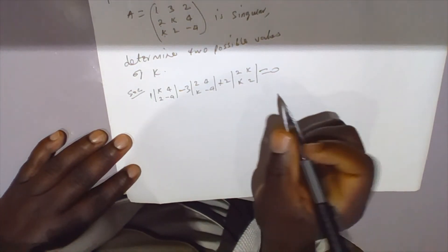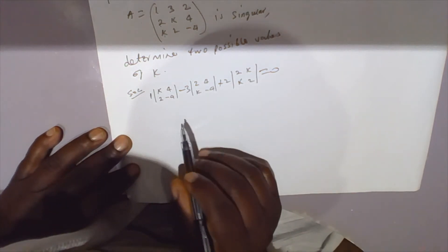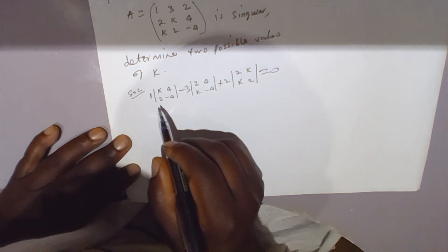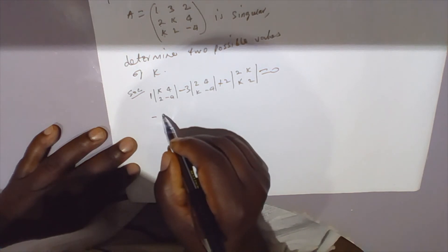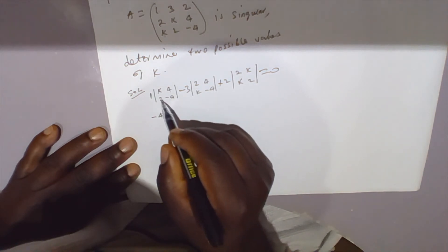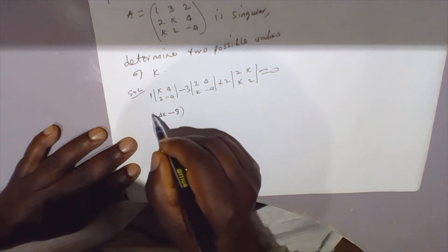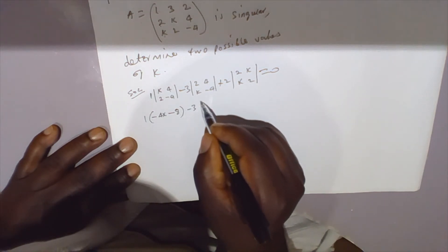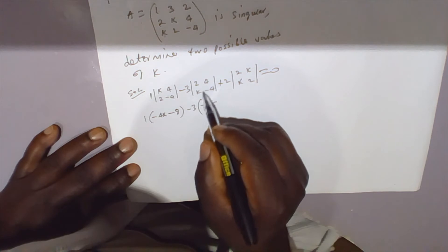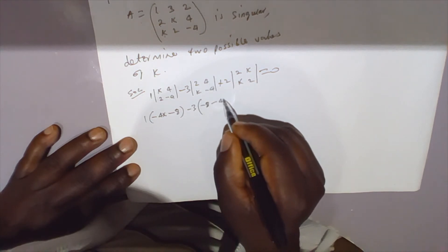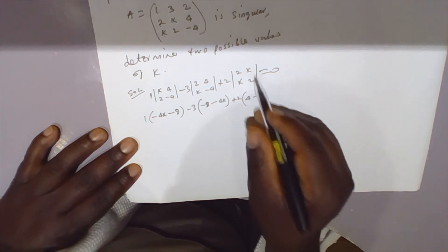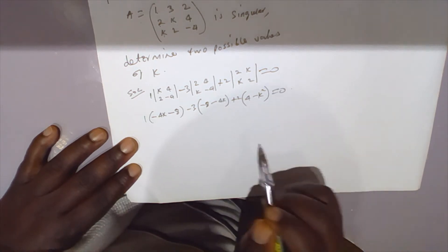This all equals zero because it's a singular matrix. Multiplying through: for the first 2x2 we get negative 4k minus 8. For the second we get negative 8 minus 4k. For the third we get 4 minus k squared. So the full expression equals zero.